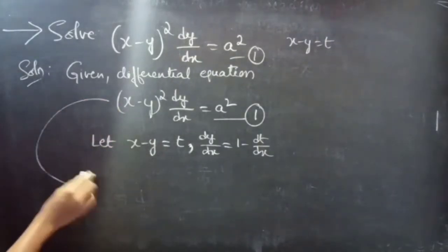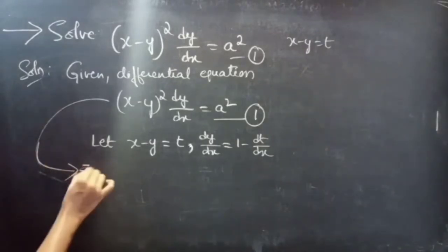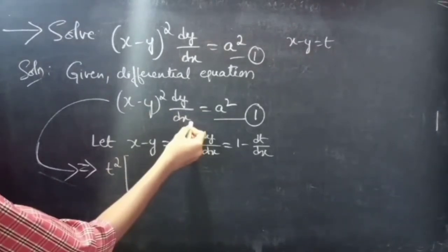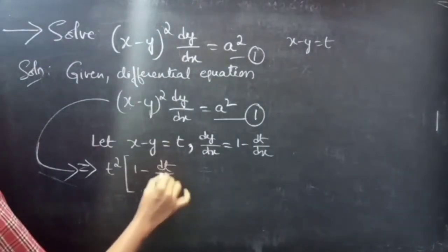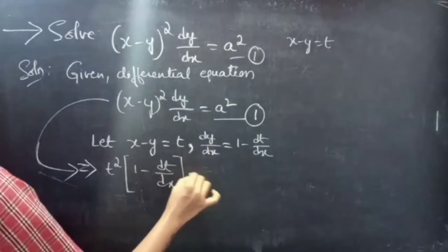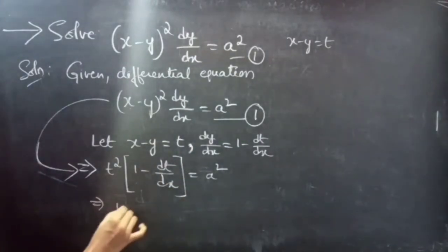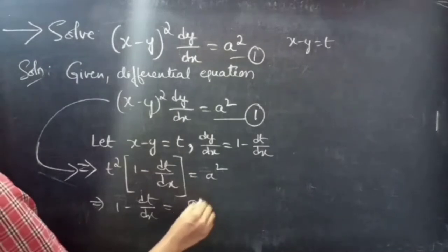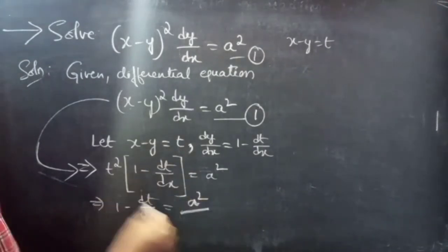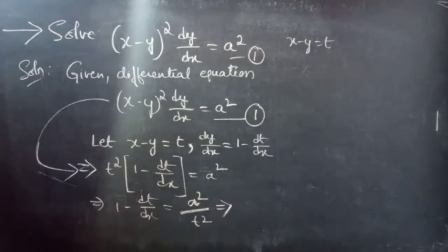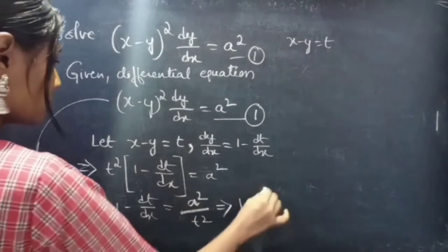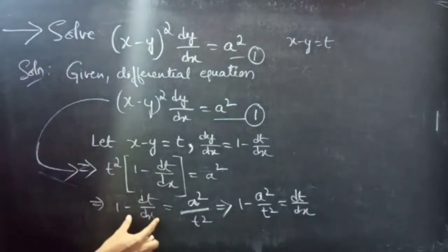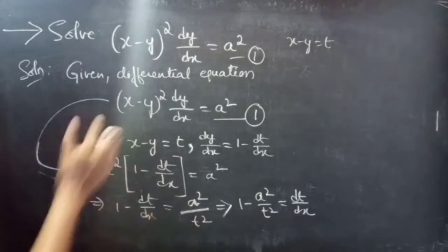Now replace x minus y by t and dy/dx by 1 minus dt/dx. The equation becomes: t squared into (1 minus dt/dx) equals to a squared. Then 1 minus dt/dx equals to a squared by t squared. Rearranging, 1 minus a squared by t squared equals to dt/dx.